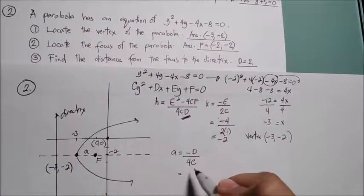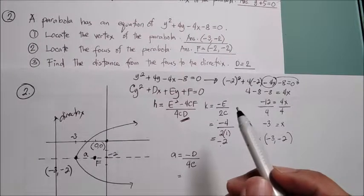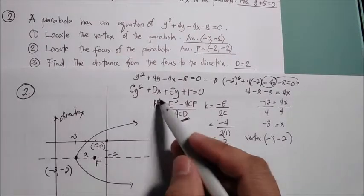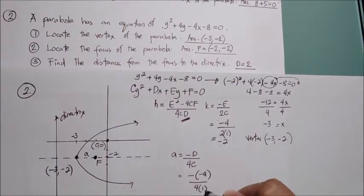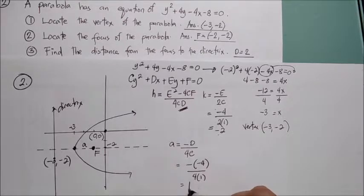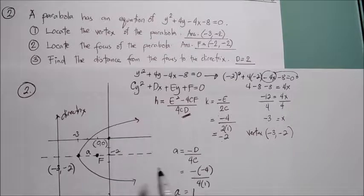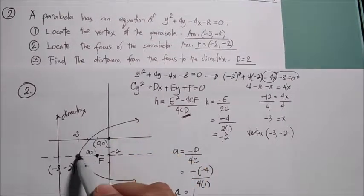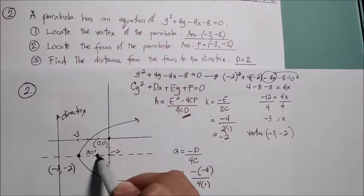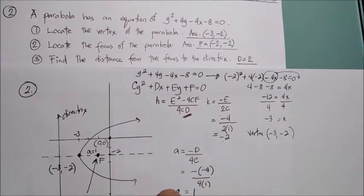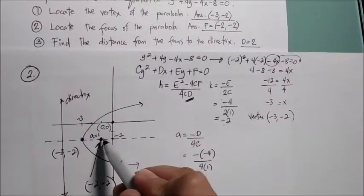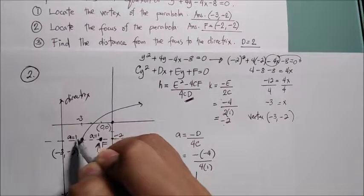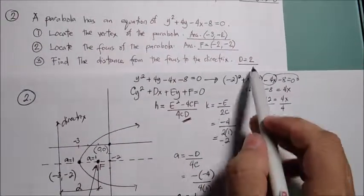To find a, use the formula a = −d / (4c). Here d = −4 (coefficient of x) and c = 1, so a = −(−4) / (4 × 1) = 4/4 = 1. Since a = 1 and the vertex is at (−3, −2), the focus is 1 unit to the right: (−2, −2). The distance from the focus to the directrix equals 2a = 2.